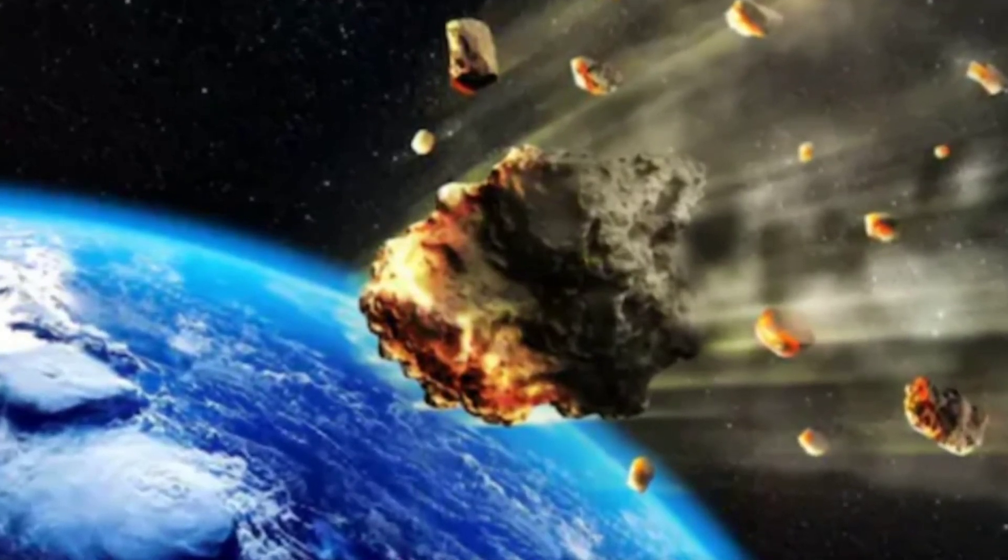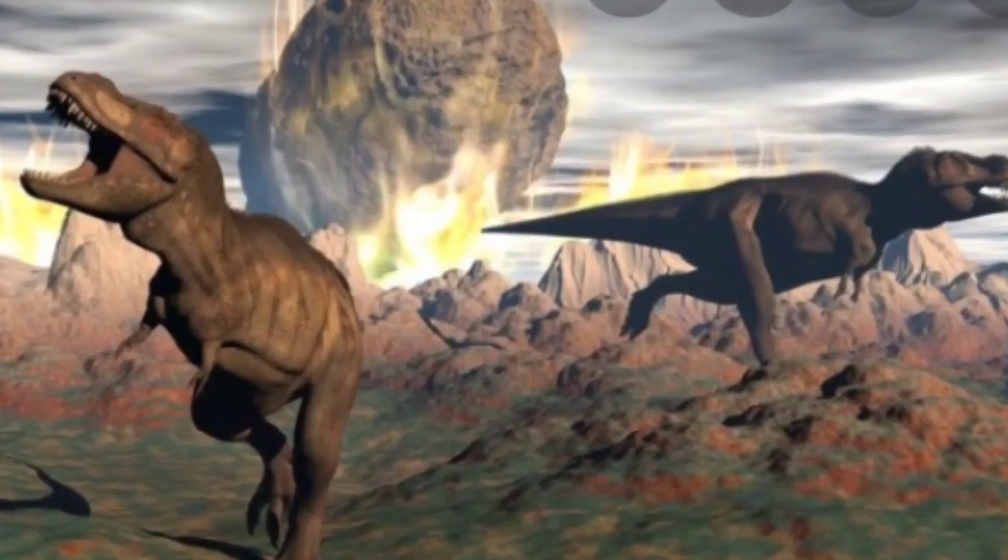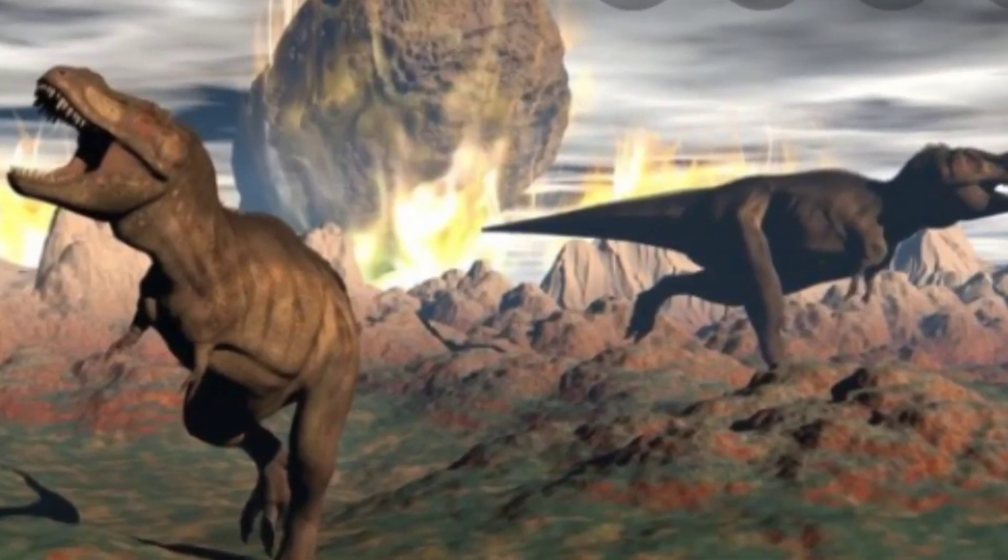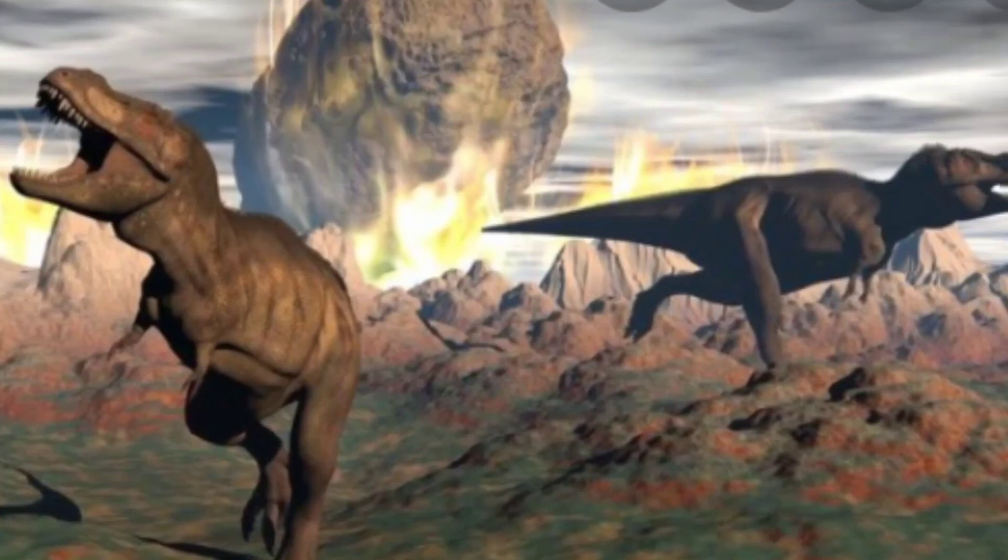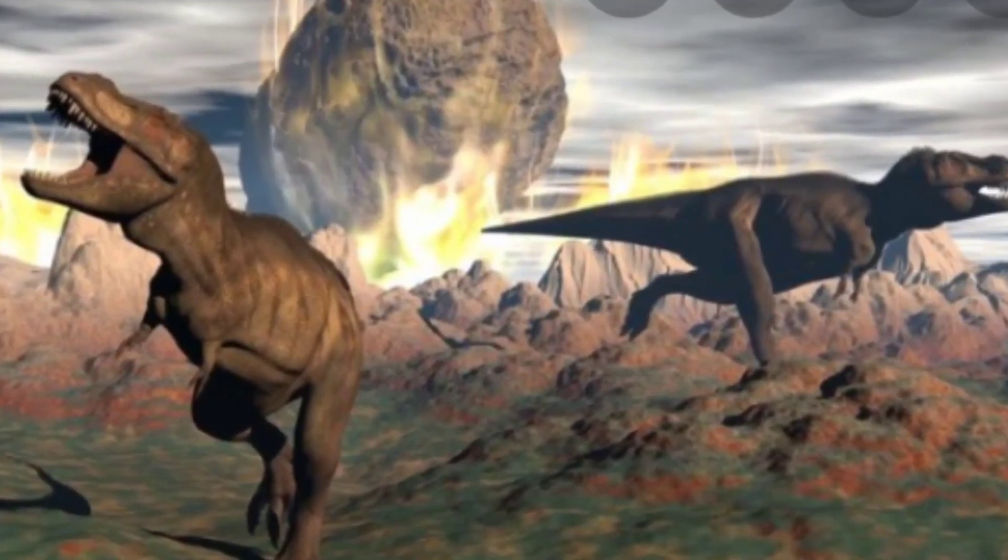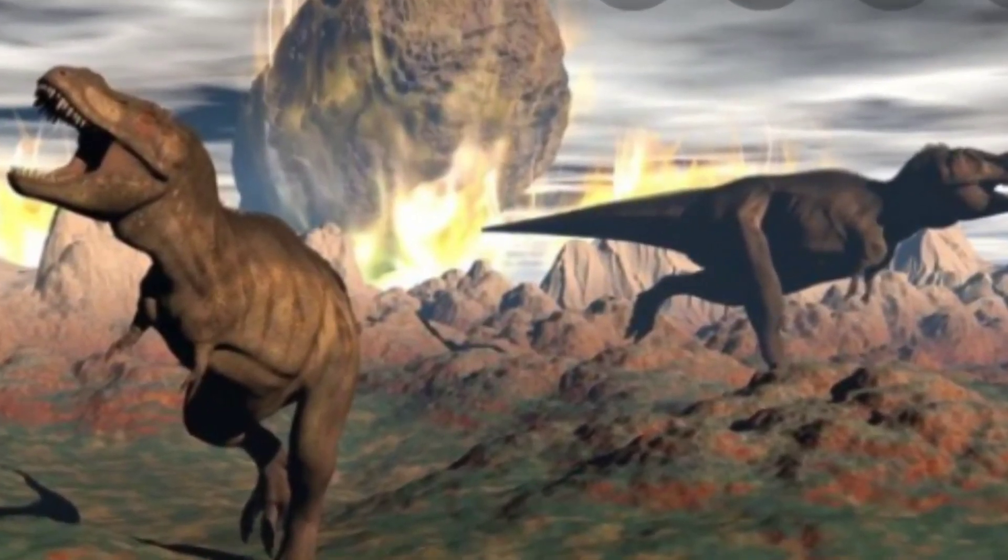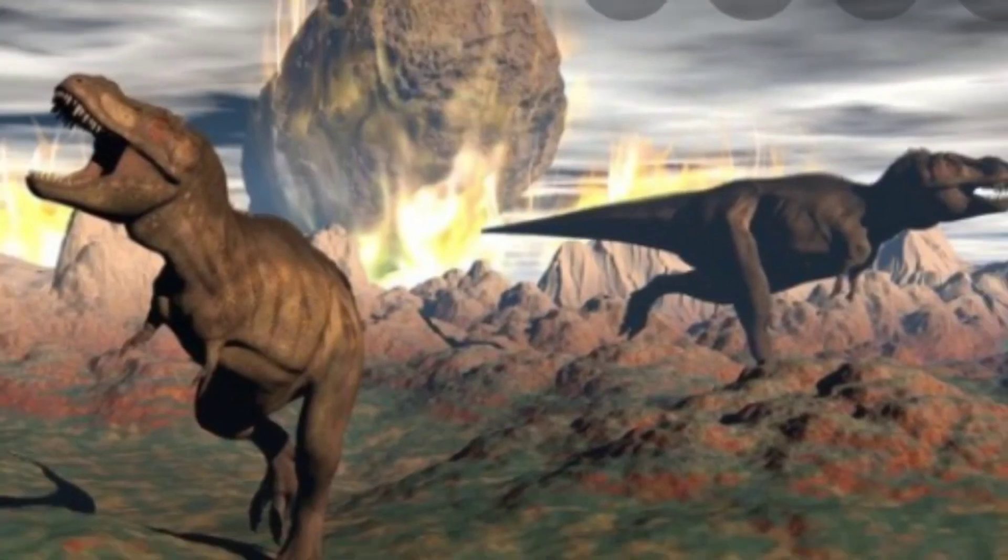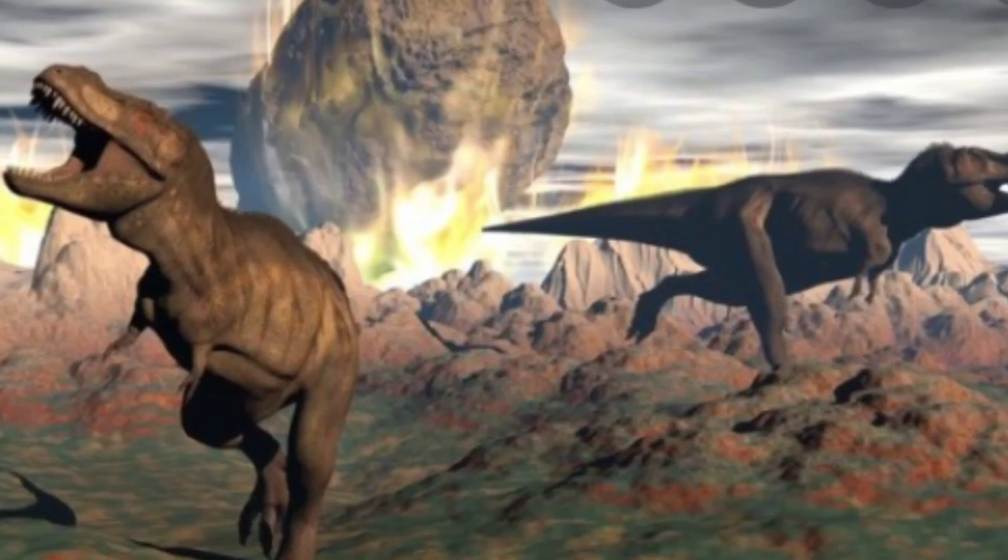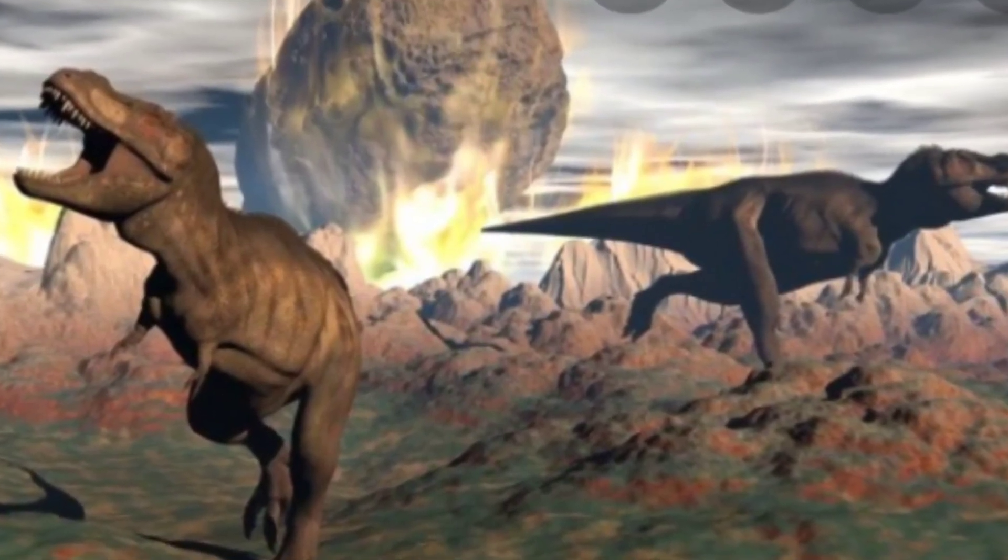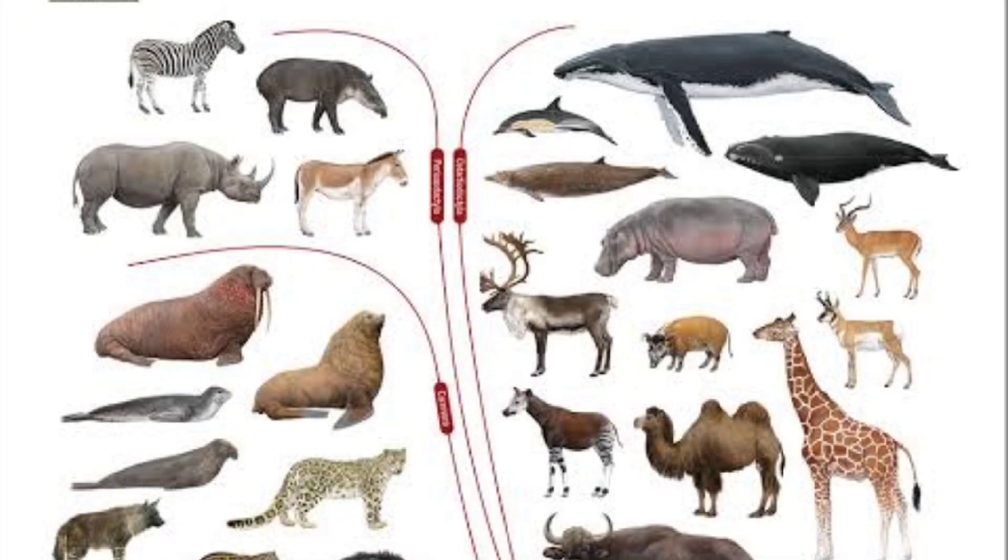Our planet was struck by an asteroid, causing the extinction of nearly three-fourths of all plant and animal species, including dinosaurs. The extinction of dinosaurs opened new habitats for small mammals that survived the impact. These habitats allowed them to evolve and develop, leading to the development of mammals of today's Earth.